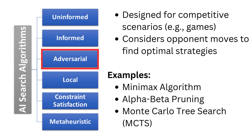Adversarial search is designed for competitive environments such as games where opponents make decisions. Examples include the minimax algorithm, alpha-beta pruning, and Monte Carlo search tree.